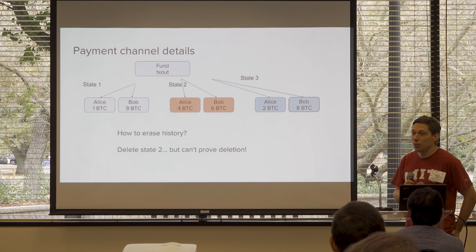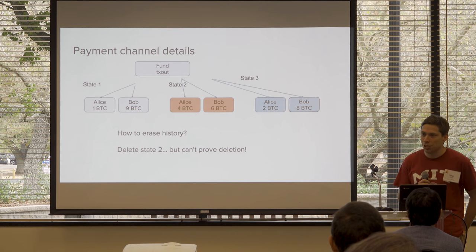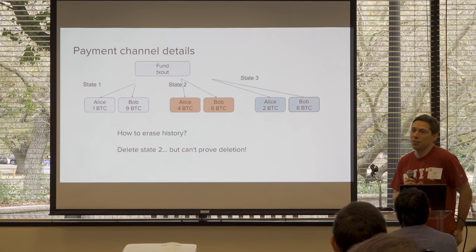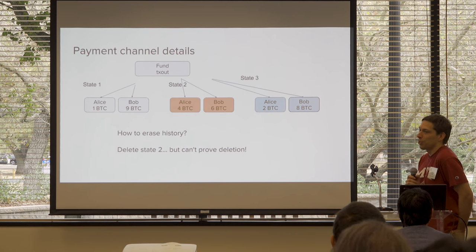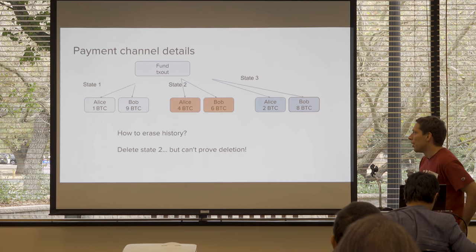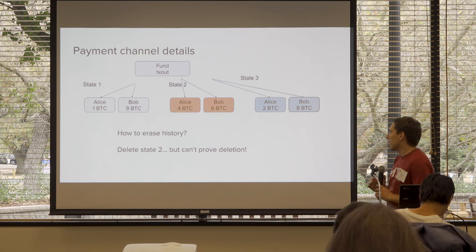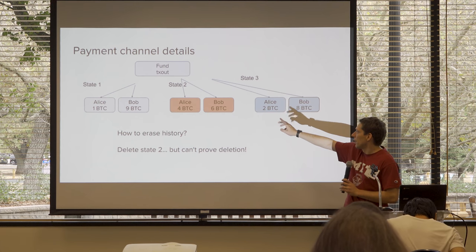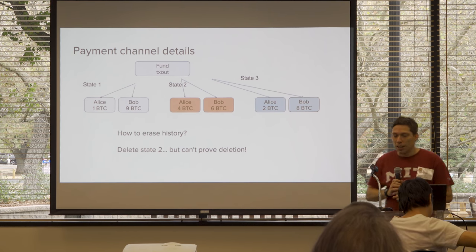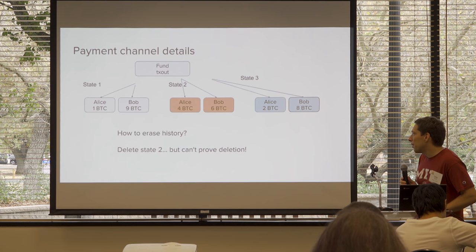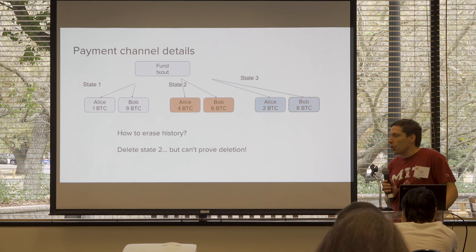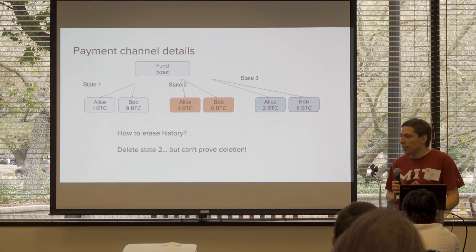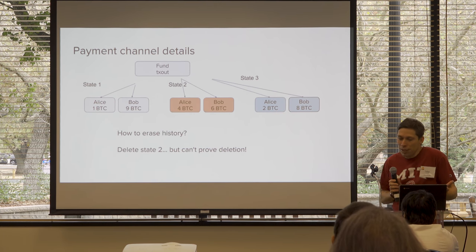When Alice says Bob's got eight instead of six and she only has two instead of four, Bob needs to say: how do I know you won't broadcast state two and keep the four? From the point of view of the network, all these states look fine — the network has no notion of which one is newer or older. All of these are fully signed transactions spending the same output, so they're all valid.